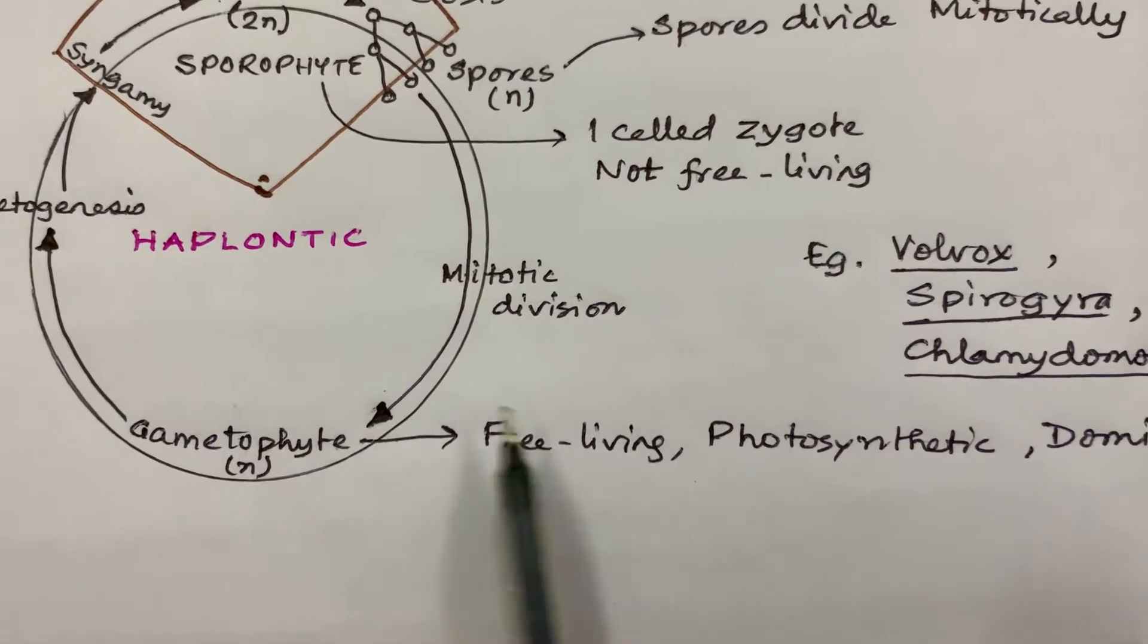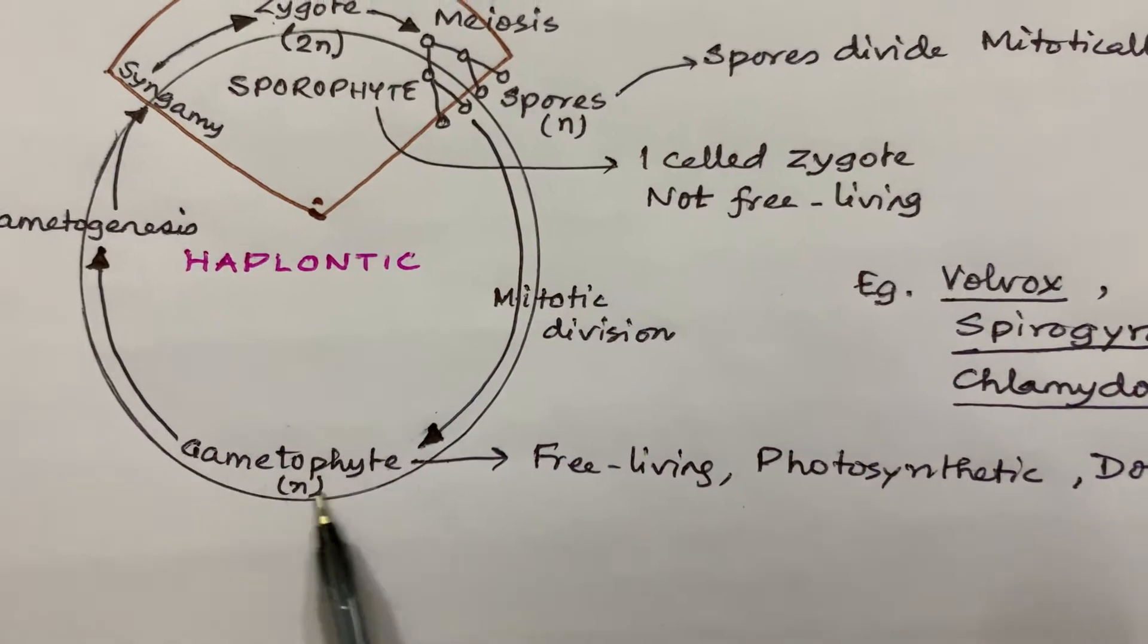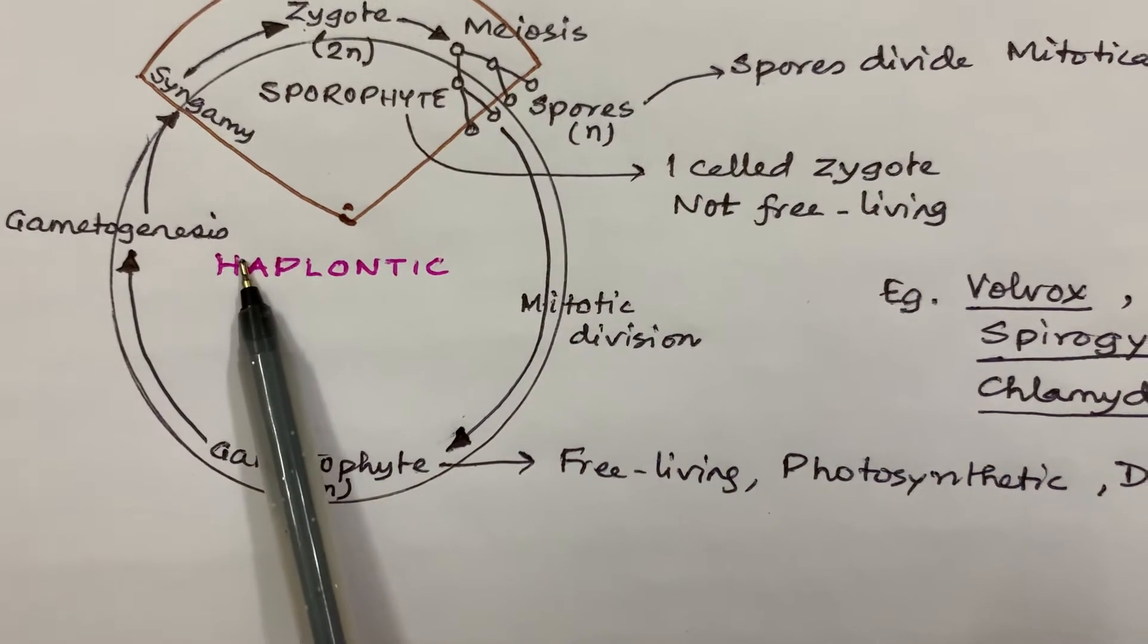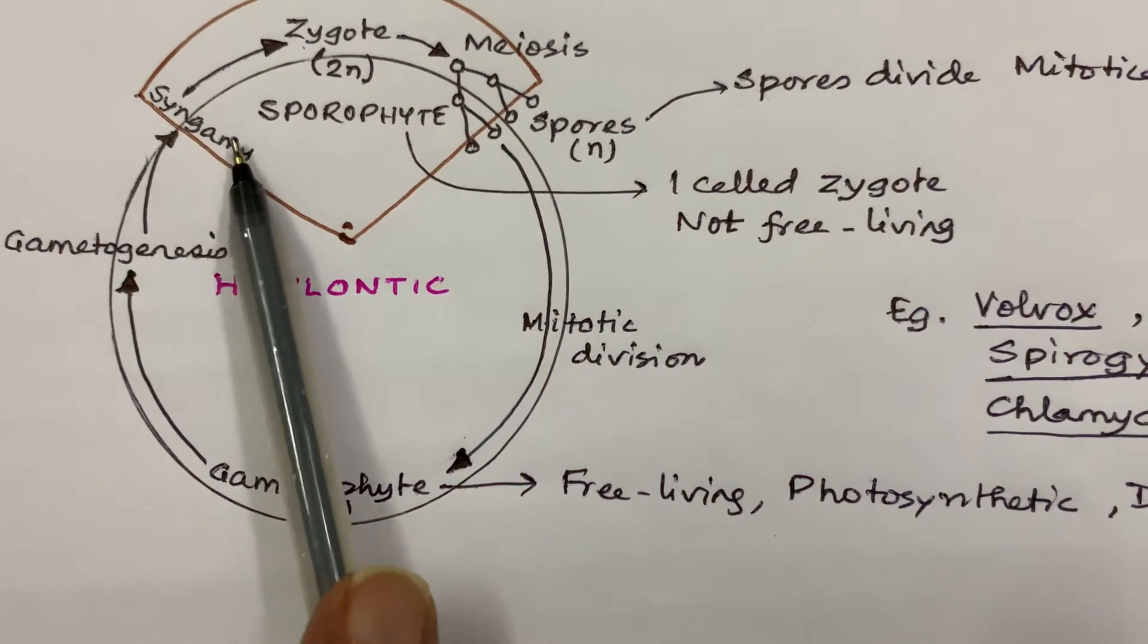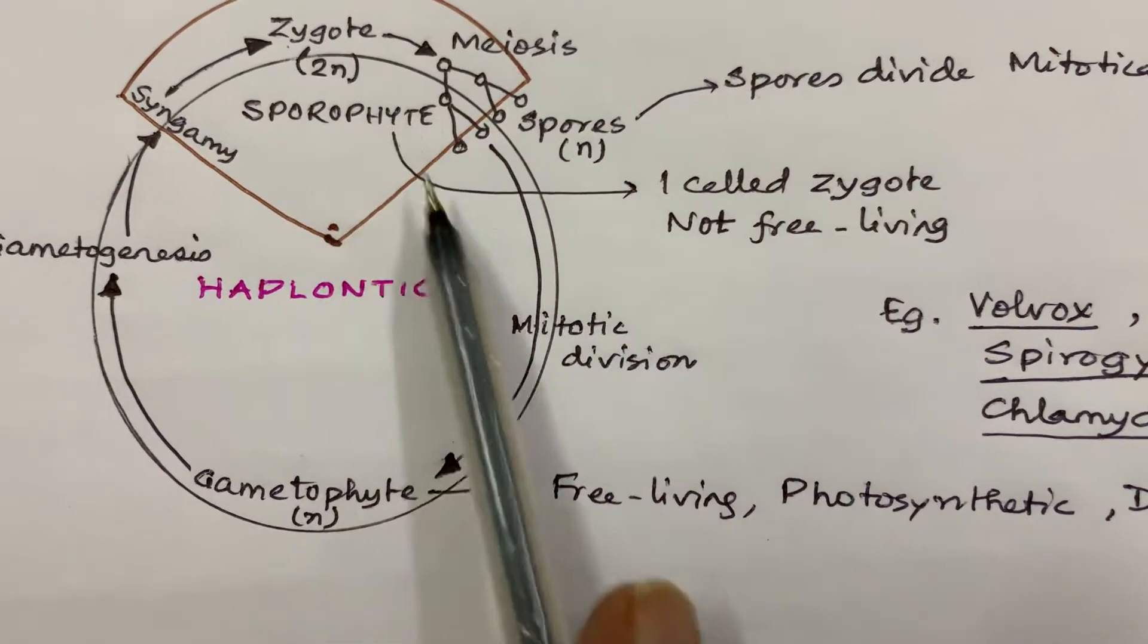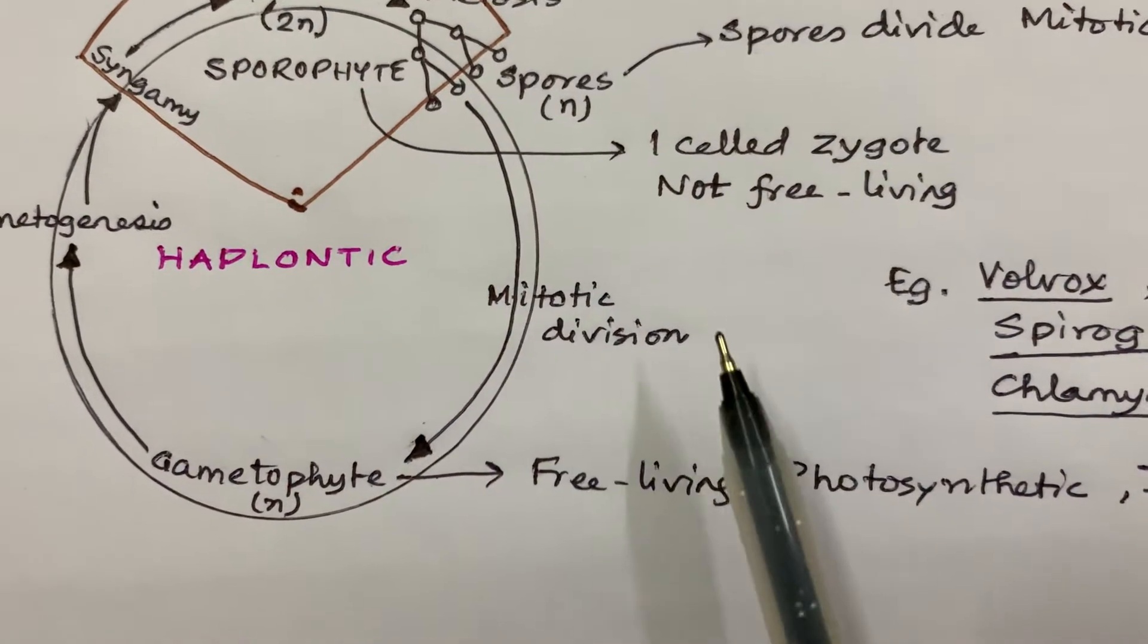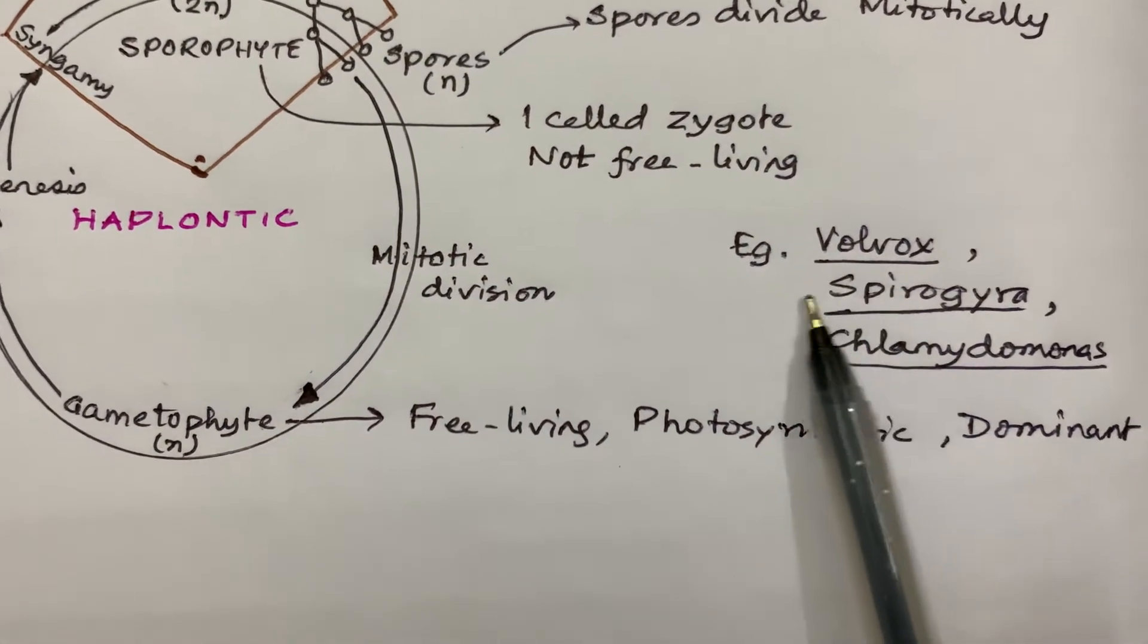Gametophyte is free-living, photosynthetic, and dominant. Photosynthetic means they are independent—they don't depend on the other generation, the sporophyte generation. The gametophyte is the main generation that is n haploid. Gametophyte undergoes gametogenesis and then they undergo syngamy to form zygote that is diploid.